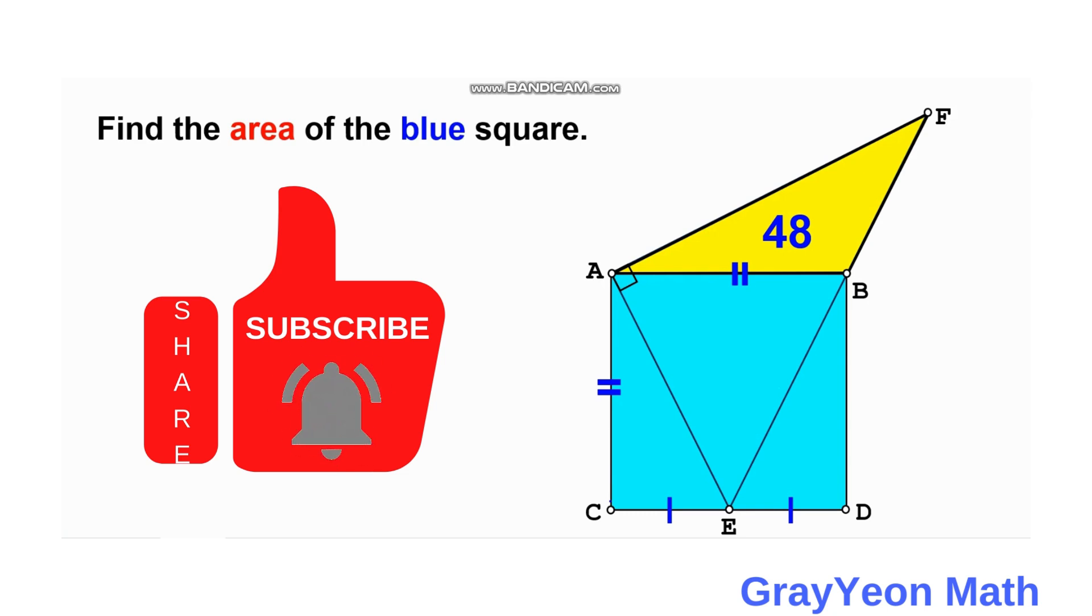A part outside the overlap is the yellow region, 48 square units. And we are required to find the area of the blue square.